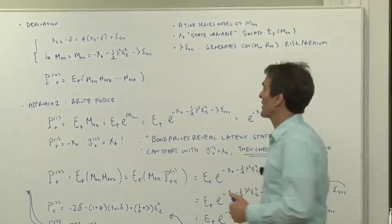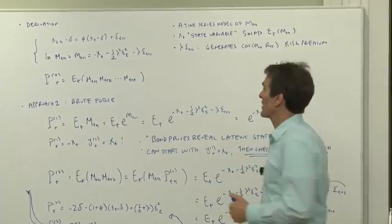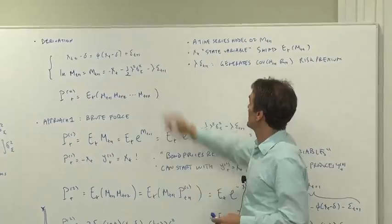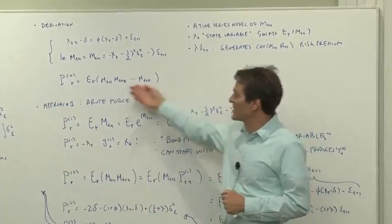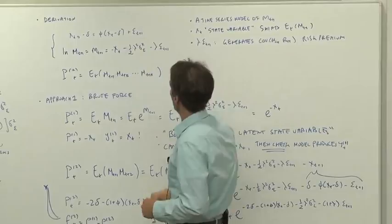The x carries the mean of where mt plus one is going to go, and then there's a shock as well. x is a state variable—that's just a convenient way of writing down a time series process for the discount factor. And then we can take its expectations to generate bond prices.